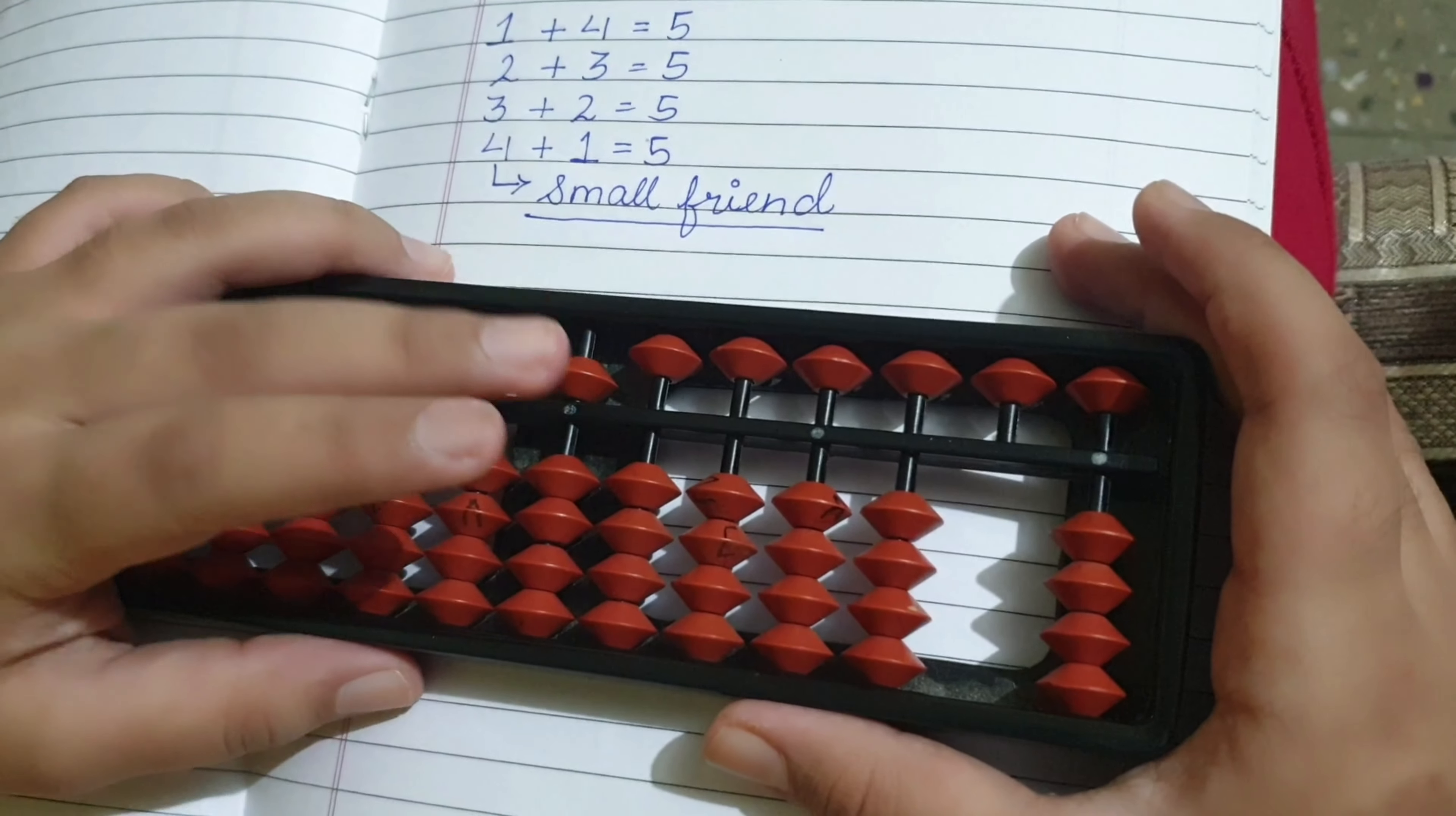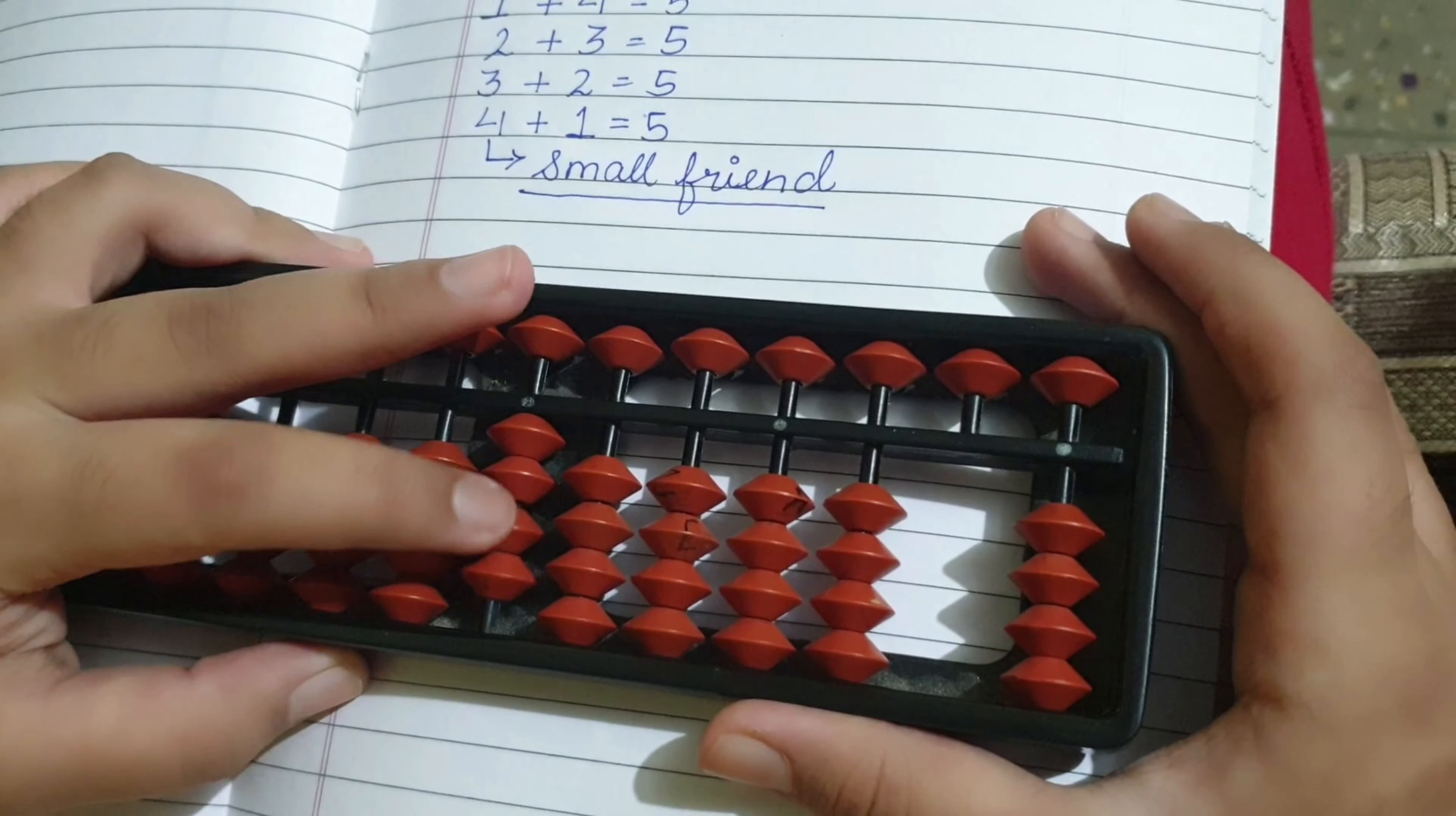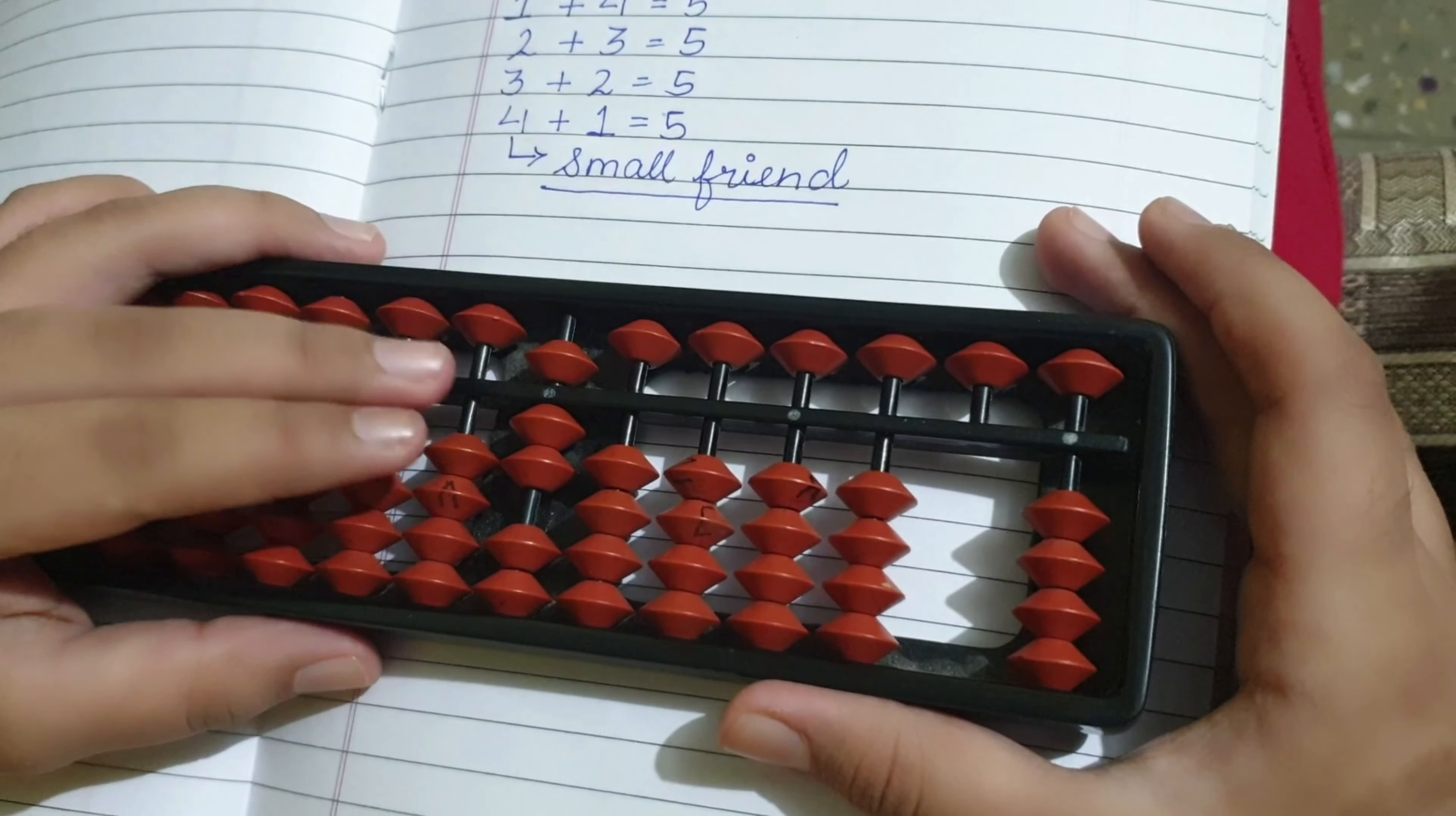Now in case we want to add 4 and we want to add 3 to it, 3's small friend is 2, so we are going to subtract 2 and add a 5 up there. So this is the answer, 4 plus 3 equals 7.